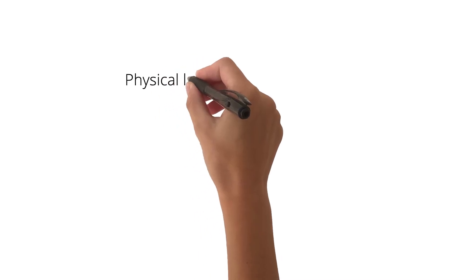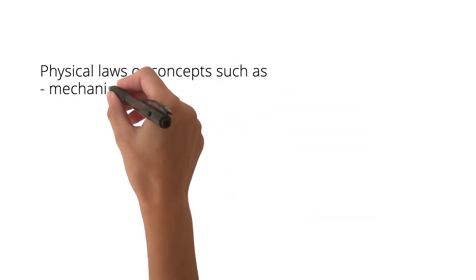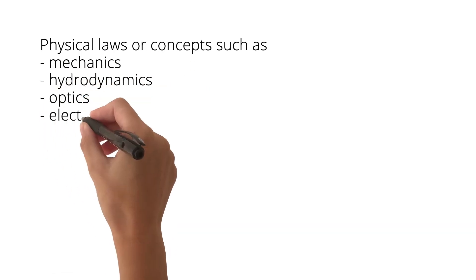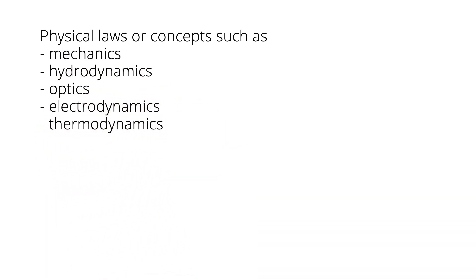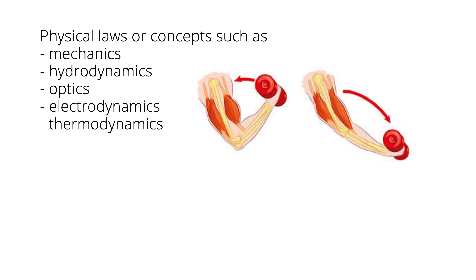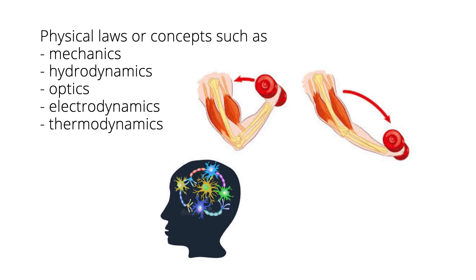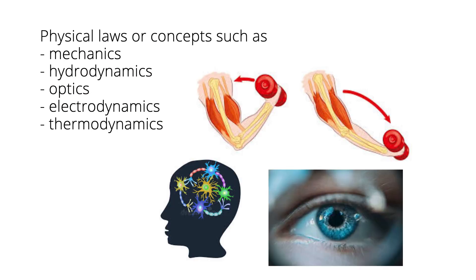To start with, physical laws or concepts such as mechanics, hydrodynamics, optics, electrodynamics, and thermodynamics are used to explain physiological observations like muscle contraction, neural communication, and vision. A second fundamental aspect of the transformation emerged from the search for universal principles governing the world around us.